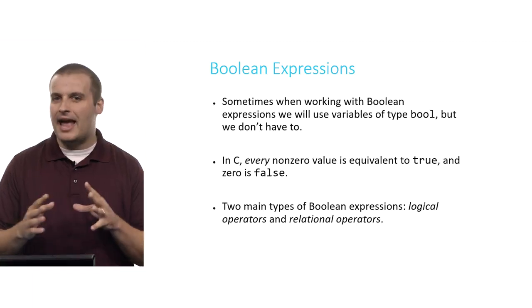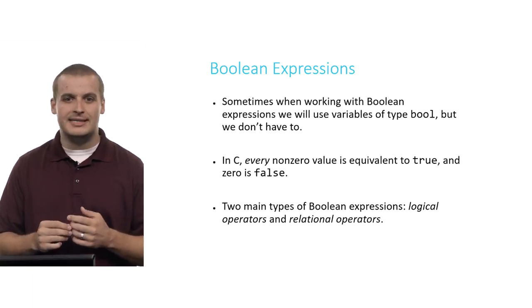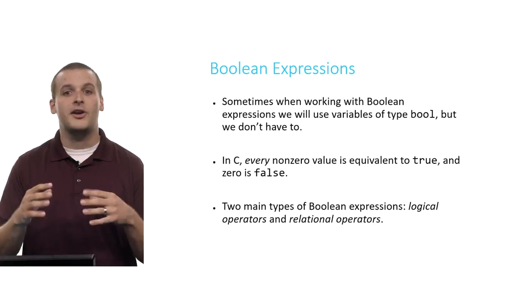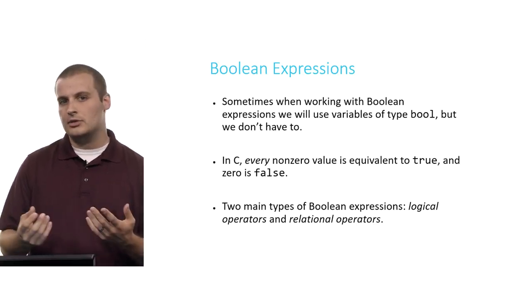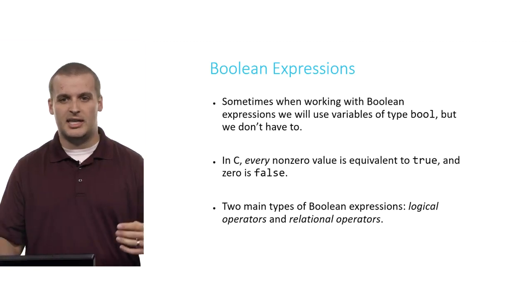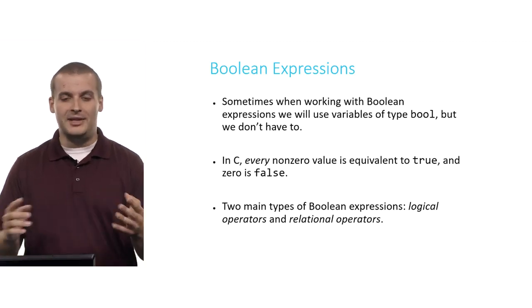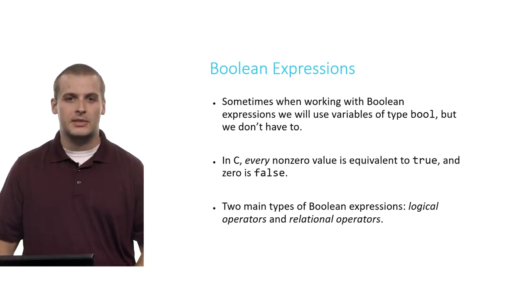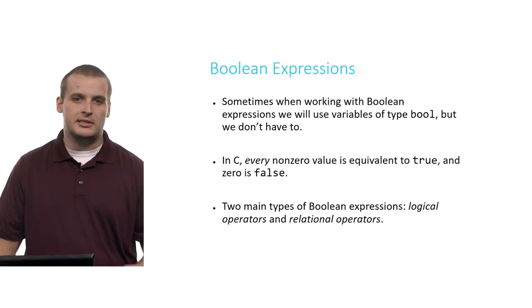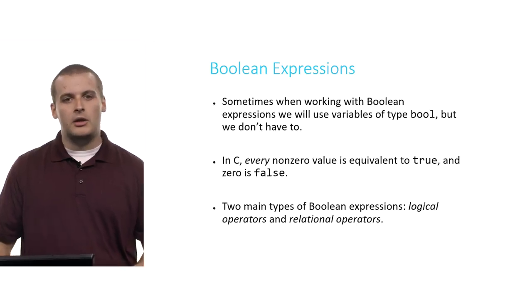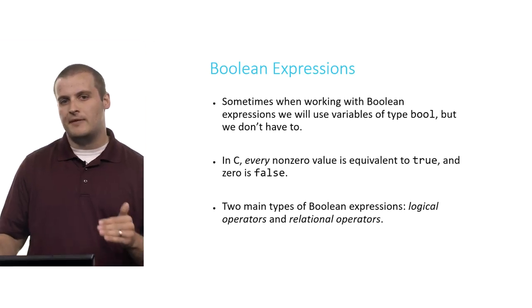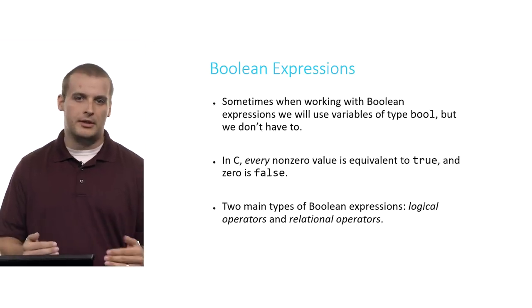Sometimes when we're working with Boolean expressions, we will use variables of type bool. You might have declared a bool type variable, and you'll use it in your Boolean expression. But you don't always have to. As it turns out in C, every non-zero value is the same as saying true. If you had declared a variable of type Boolean and assigned it the value true, that's the same as declaring an integer and assigning it the value 1, 2, 3, or really any value whatsoever other than 0. Because in C, every non-zero value is true. 0, on the other hand, is false. This might come in handy later on to know. We don't always have to use Boolean type variables when we are working with Boolean expressions.